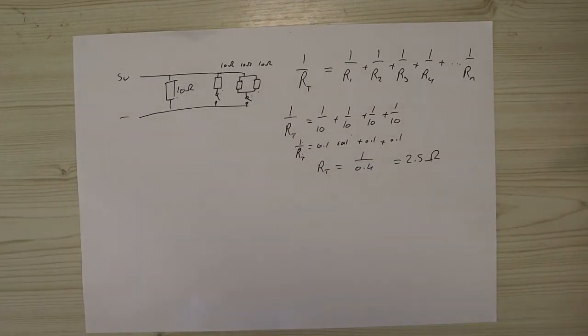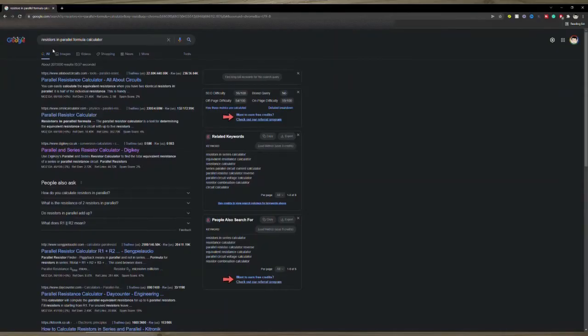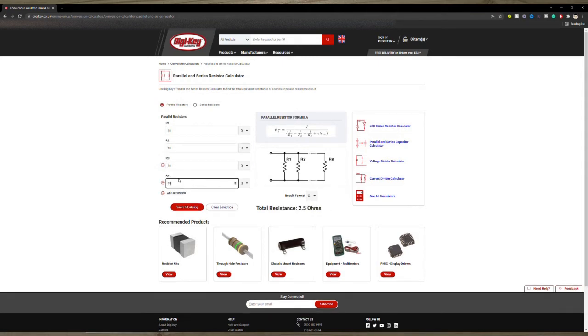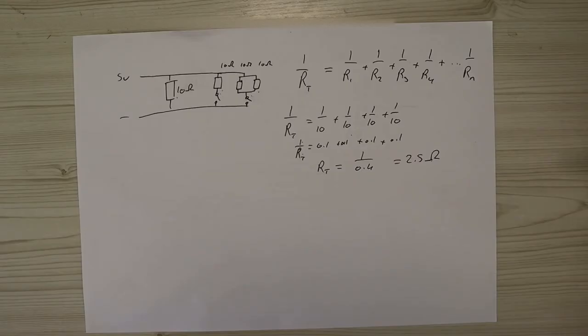You can use, if you don't know how to do this, you can use a simple calculator online. Digikey have a really good one where you can enter the numbers quite simply. You can just keep adding how many resistors. And if you've got more from one, you can just add more. And if there are different values, you can also add those. And it will give you the total resistance out.